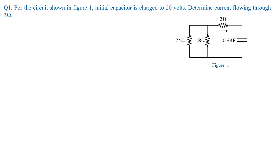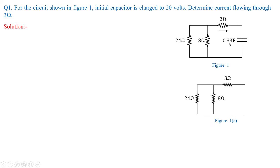First, on a similar approach, we are going to see a problem with a 0.33 farad capacitor charged to 20 volts. Determine the current flowing through 3 ohms — the direction of the current is also shown. Looking at this figure, when a capacitor is removed from the main circuit by following the nodes A, B, C, D, you can easily understand what we are going to do.